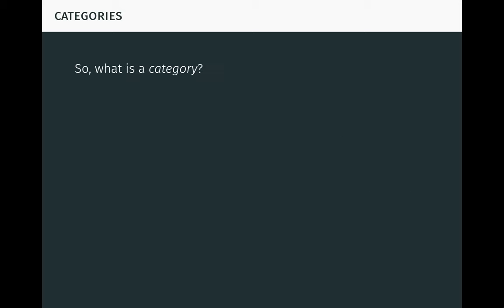So, what is a category? We will define it over the next few slides. A category consists of two types of things. Objects, which we typically denote by letters like A, B, C, and so on.